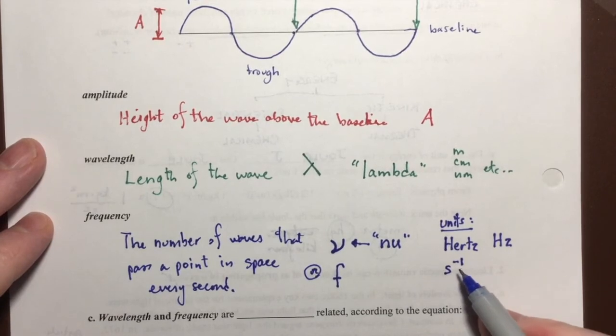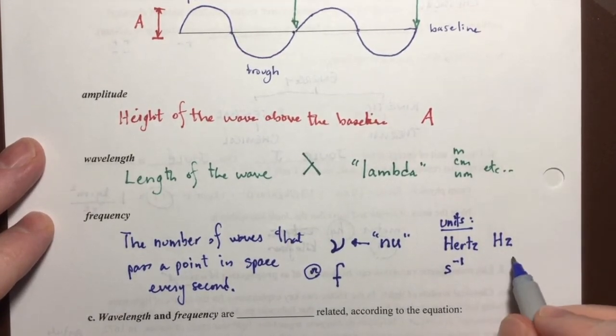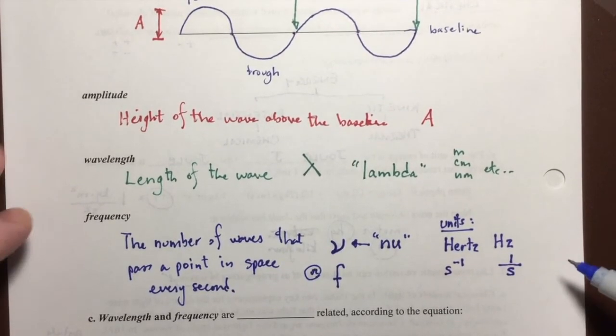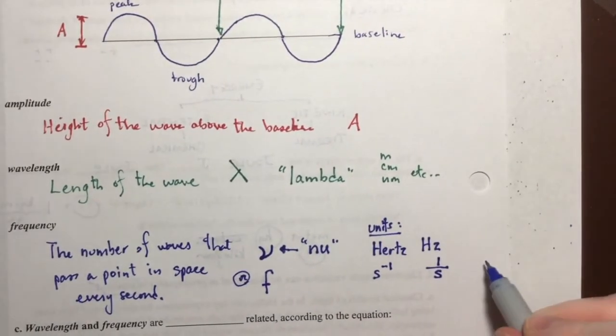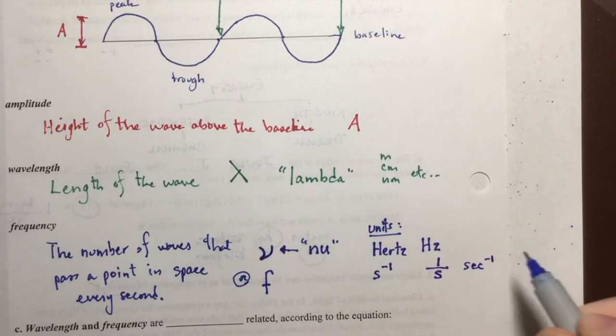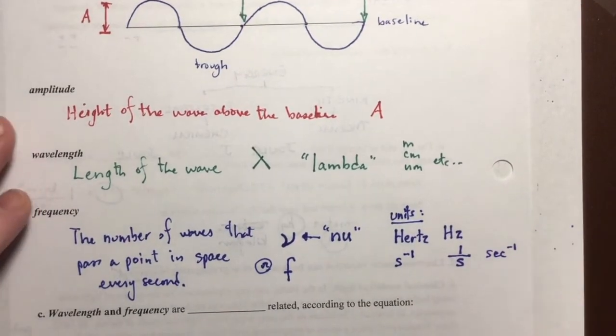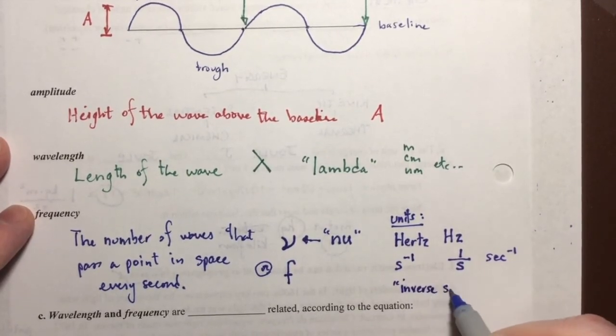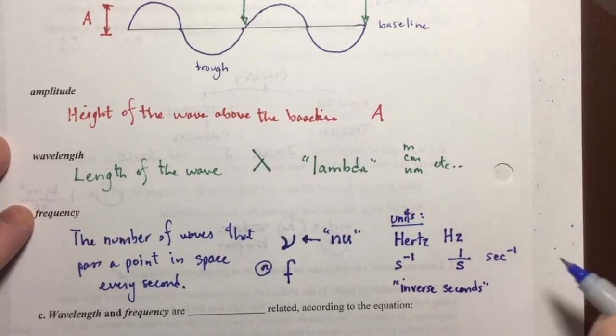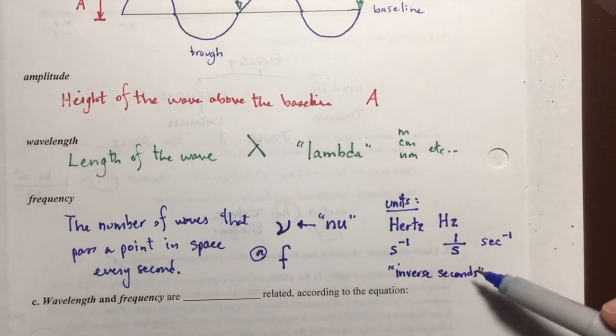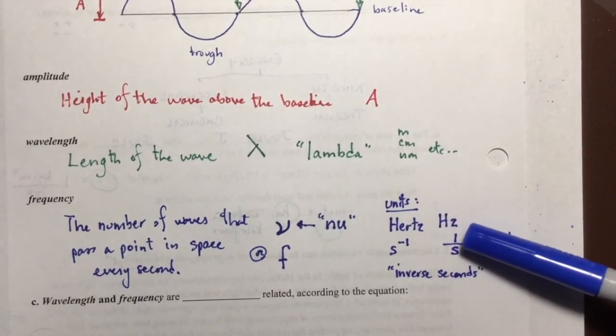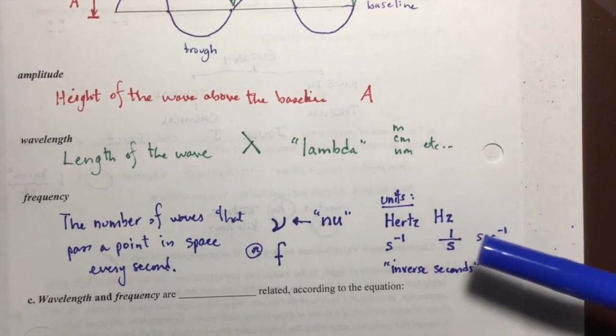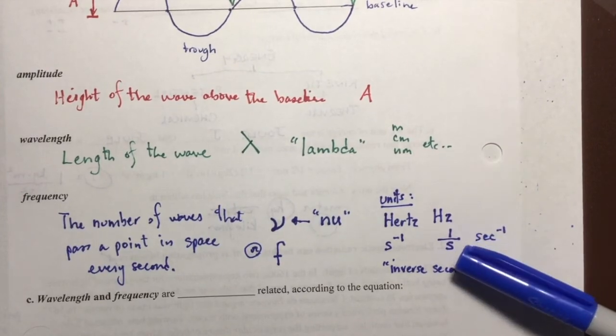The other units that we are going to use in this class is the s to the minus one. And as you may recall, anything raised to a negative one power literally means that it's one over that value. Another way that we'll see this is written sec to the minus one. And sometimes you will hear it described as inverse seconds.